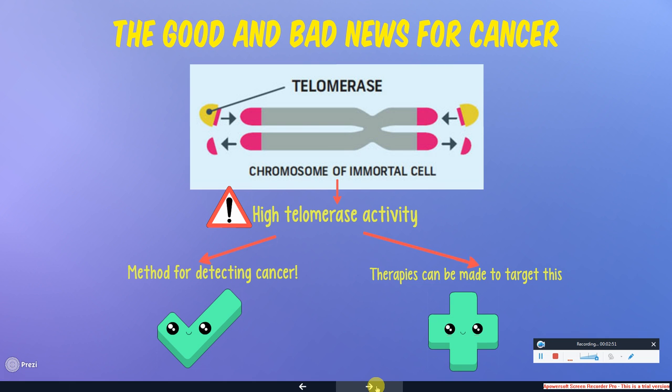Telomerase is essential for the normal function of cells. However, overexpression can lead to cells becoming cancerous with replicative immortality, a hallmark of cancer cells.